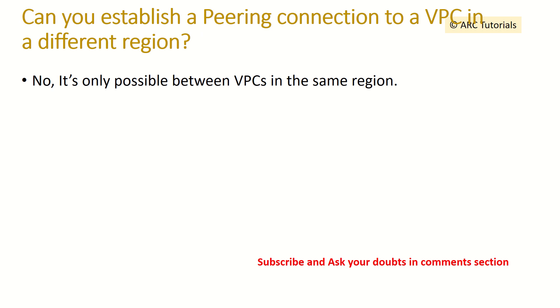Can you establish a peering connection to a VPC in a different region? No, it is not possible. You can only connect between VPCs in the same region, not in different regions.